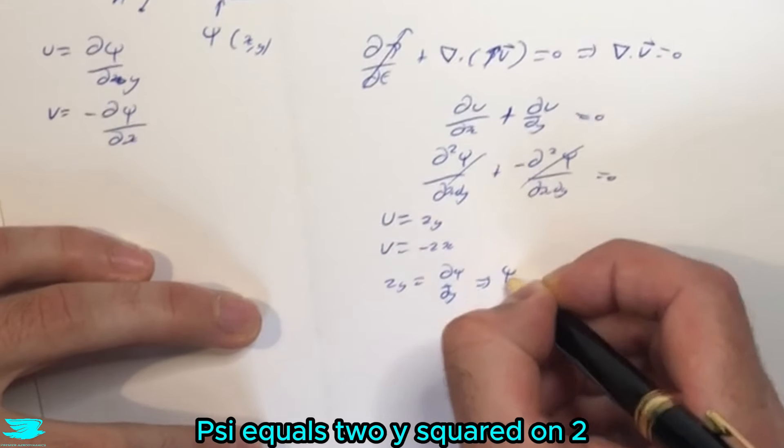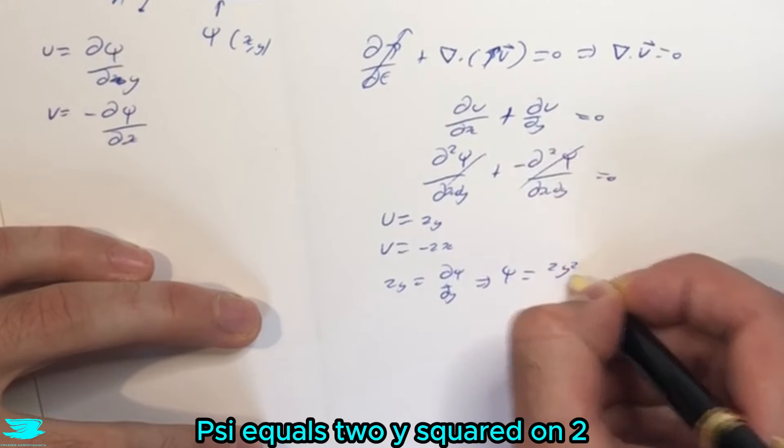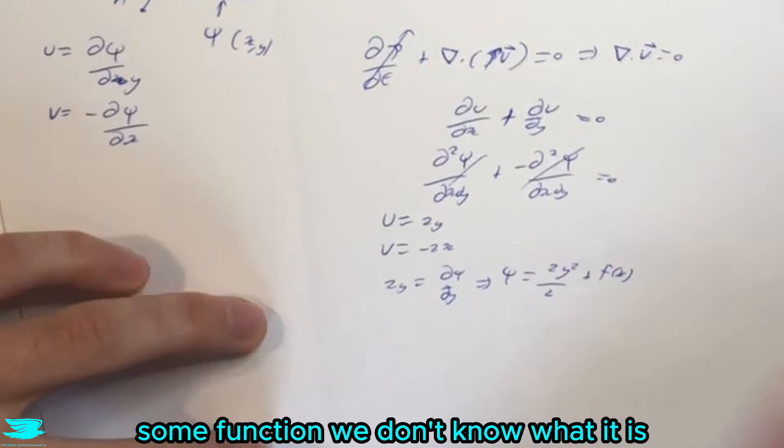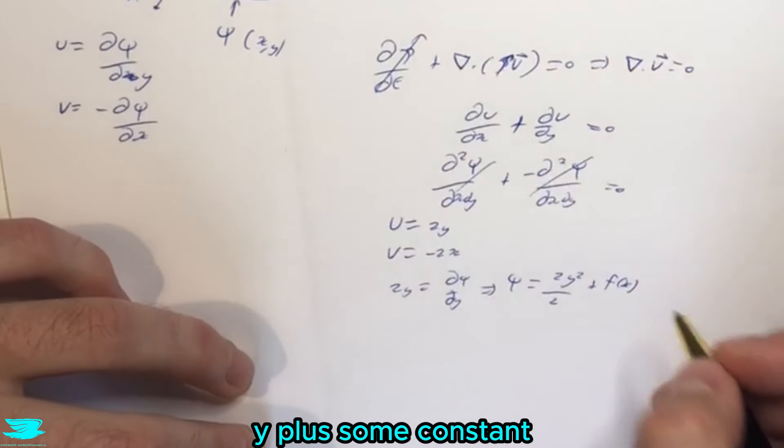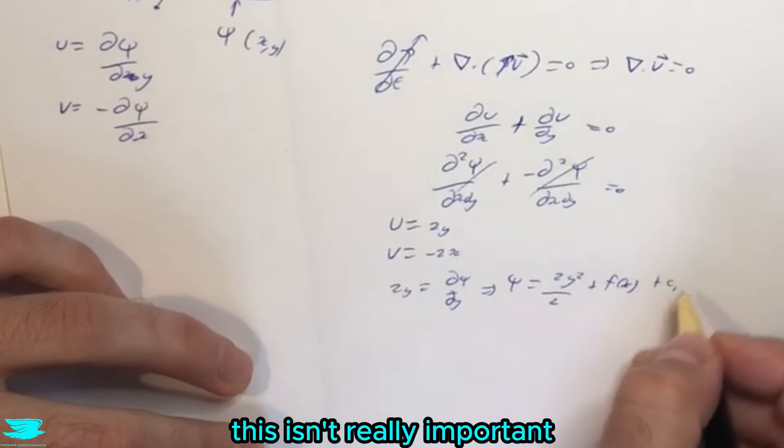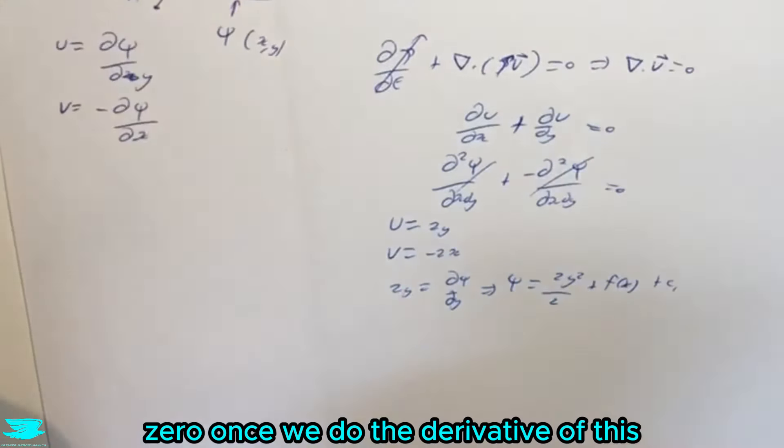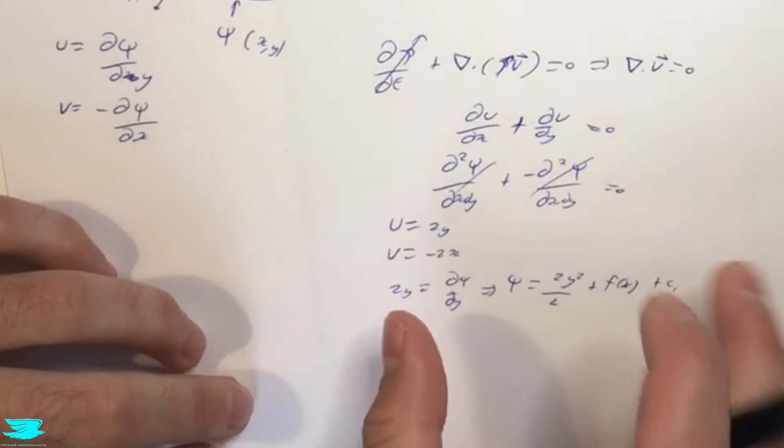As such, psi equals 2y squared over 2 plus a function of x, some function we don't know what it is because we're only integrating with respect to y, plus some constant. The constant isn't really important because it will just go to zero once we take a derivative anyway.